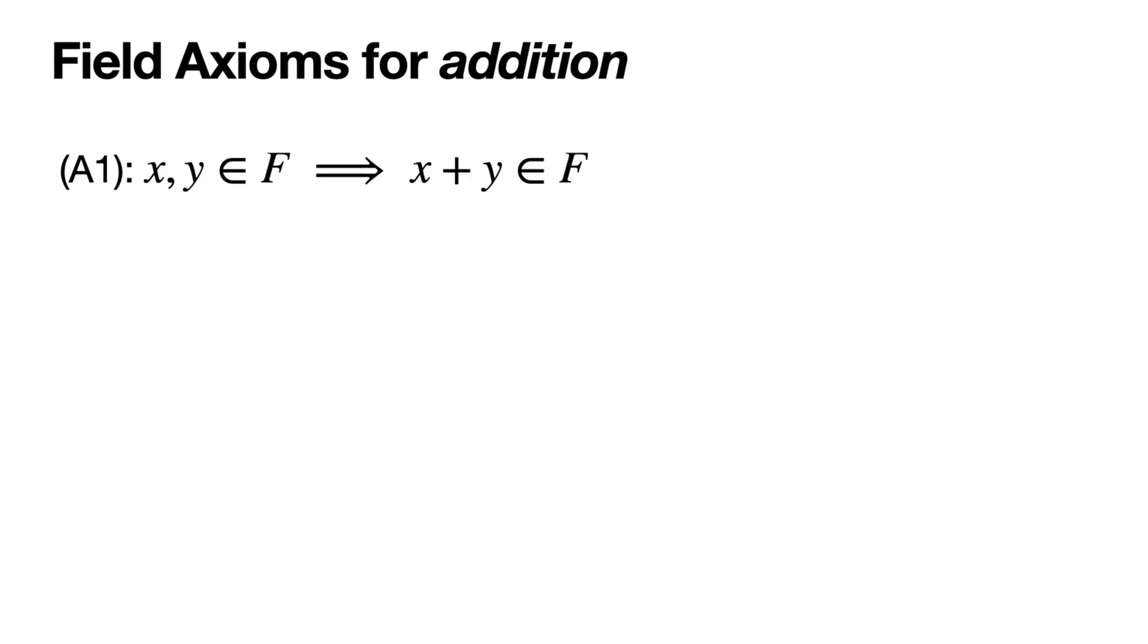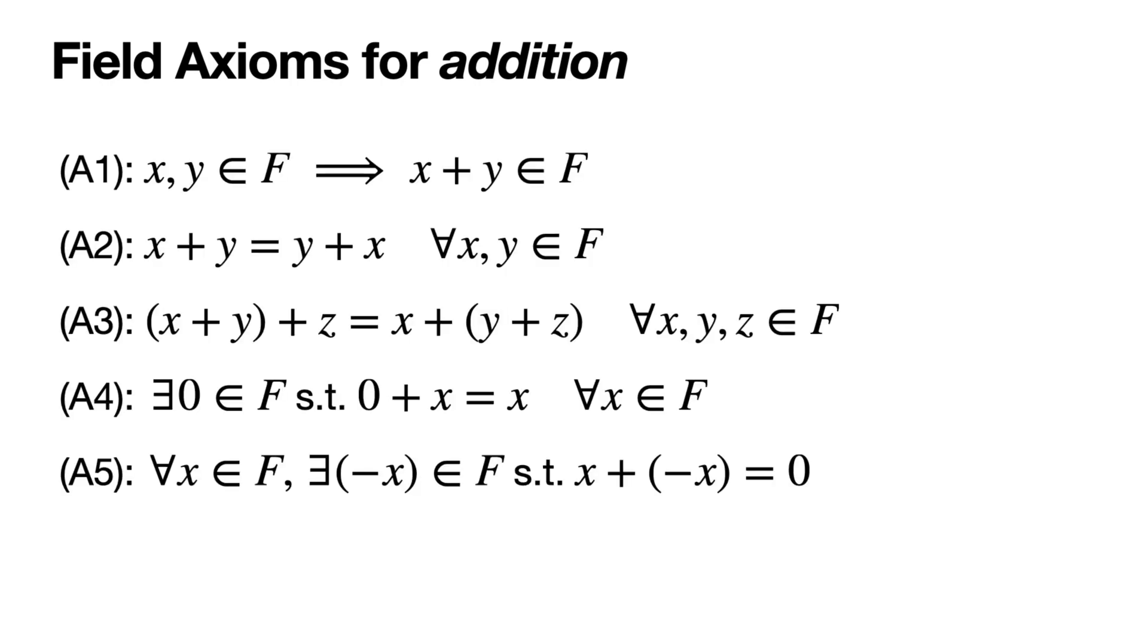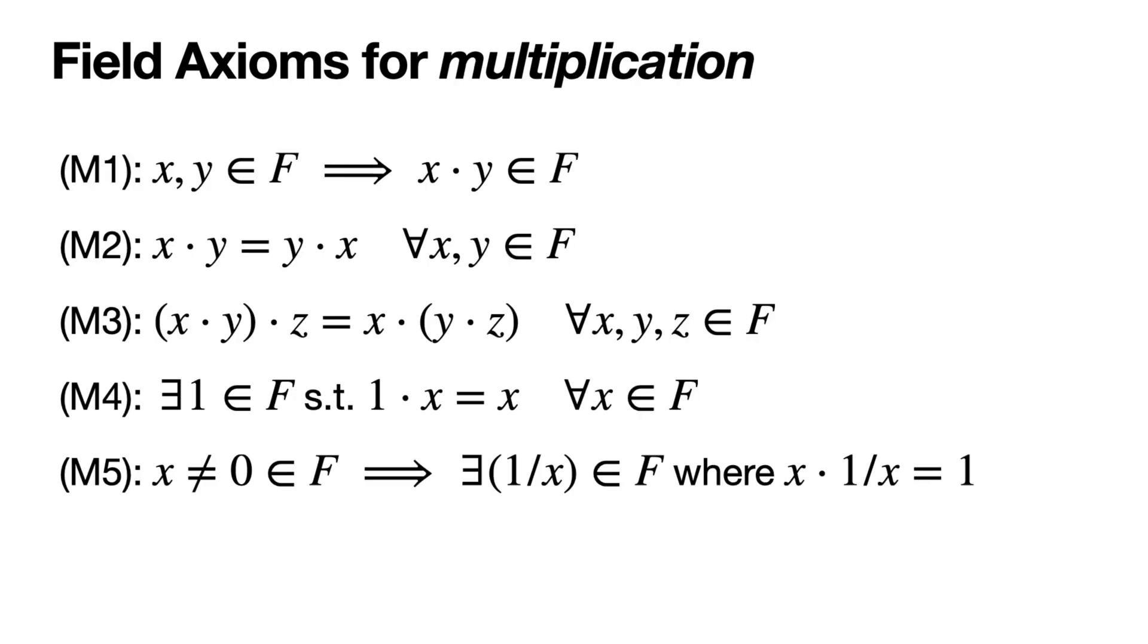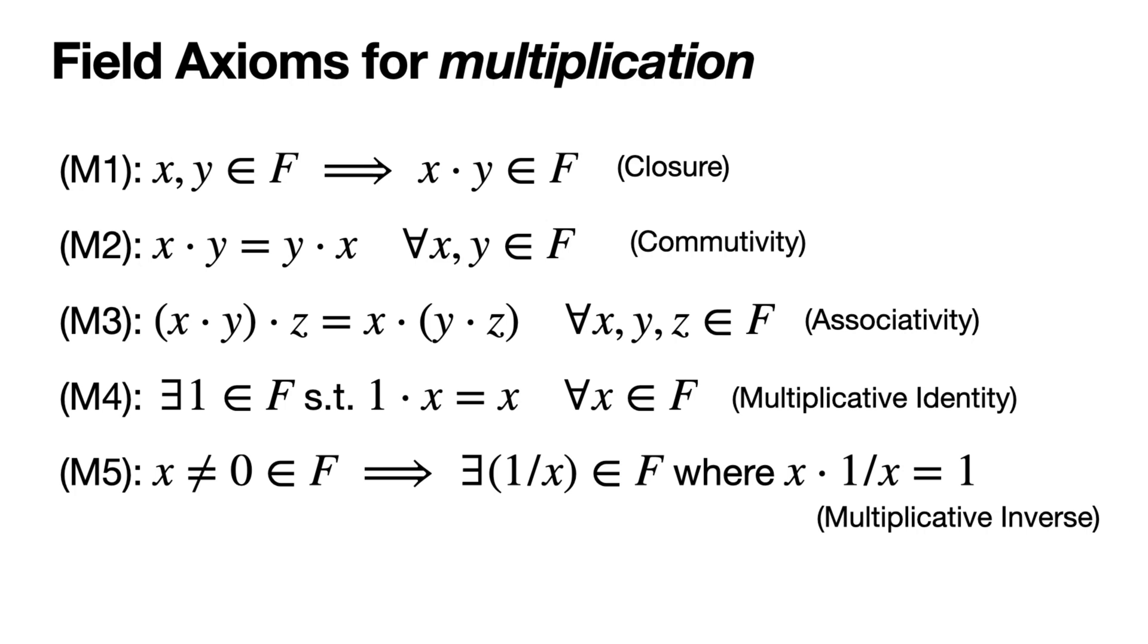So the field axioms for addition, and I won't go through all of these in detail, but I am going to list them because we'll come back to them later when we need to, when we start talking about infinity. So if you want to take a look, you can pause and they basically go like this. They have all sorts of names. You have your closure and then the standard stuff you might've learned in elementary school, like commutativity and associativity. Similarly, you have your five field axioms for multiplication. These also have very similar names. You have closure and of course, commutativity and associativity.